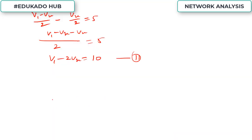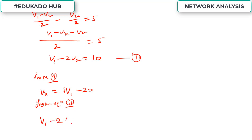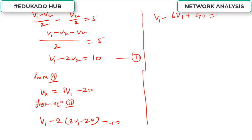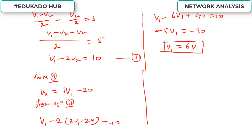Using Equations 1 and 2 to find V1 and Vx: from Equation 1, Vx equals 3V1 minus 20. Substituting into Equation 2: V1 minus 2 times (3V1 minus 20) equals 10. Solving: V1 minus 6V1 plus 40 equals 10, giving minus 5V1 equals minus 30, so V1 equals 6 volts. This is how KCL is used to find current and voltages across any element.